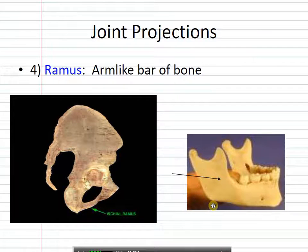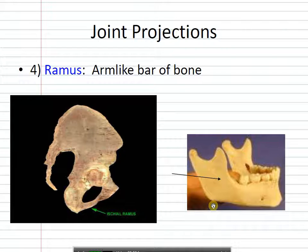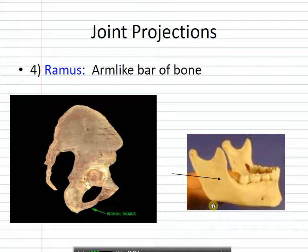A ramus is an arm-like structure. When you're looking at the hip, you have different parts, including the ischium. If you put your hand around this arm-like structure, it's called the ischial ramus. You have the same thing in the jaw — the ramus of the mandible is the part that you can put your finger around and hold on to.